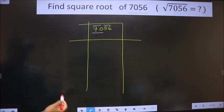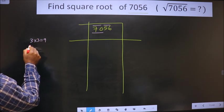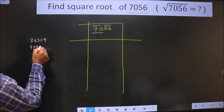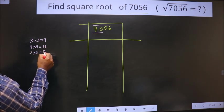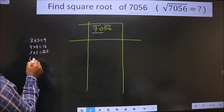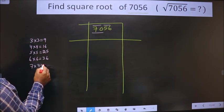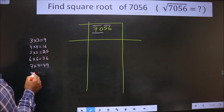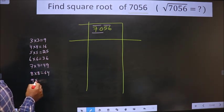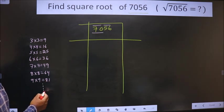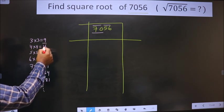The square numbers are these: 3 into 3 is 9, 4 into 4 is 16, 5 into 5 is 25, 6 into 6 is 36, 7 into 7 is 49, 8 into 8 is 64, 9 into 9 is 81, and it goes on. These numbers we call perfect squares.